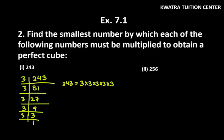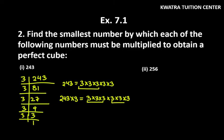Let's see here that the factors are being paired or not. Factor 3 has one pair that is incomplete. So you have to multiply 3 to make it a perfect cube. 243 × 3 equals 3 × 3 × 3 × 3 × 3 × 3. Now the pairing is complete. This means this is your perfect cube. So in the end, you can write that 3 must be multiplied to obtain a perfect cube.